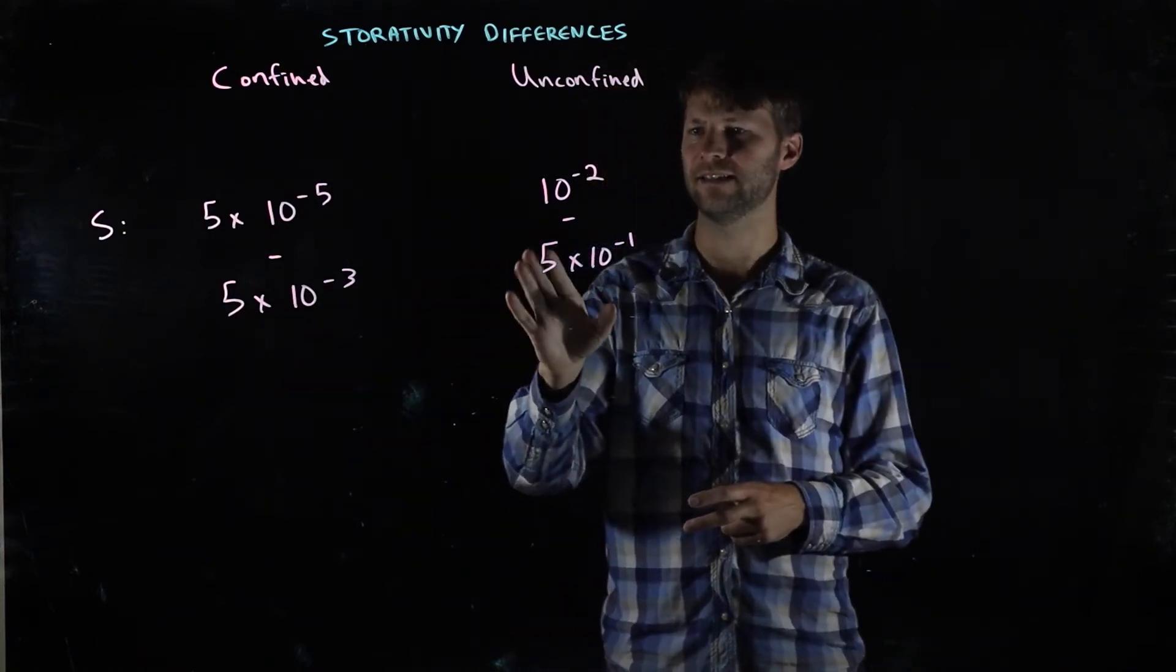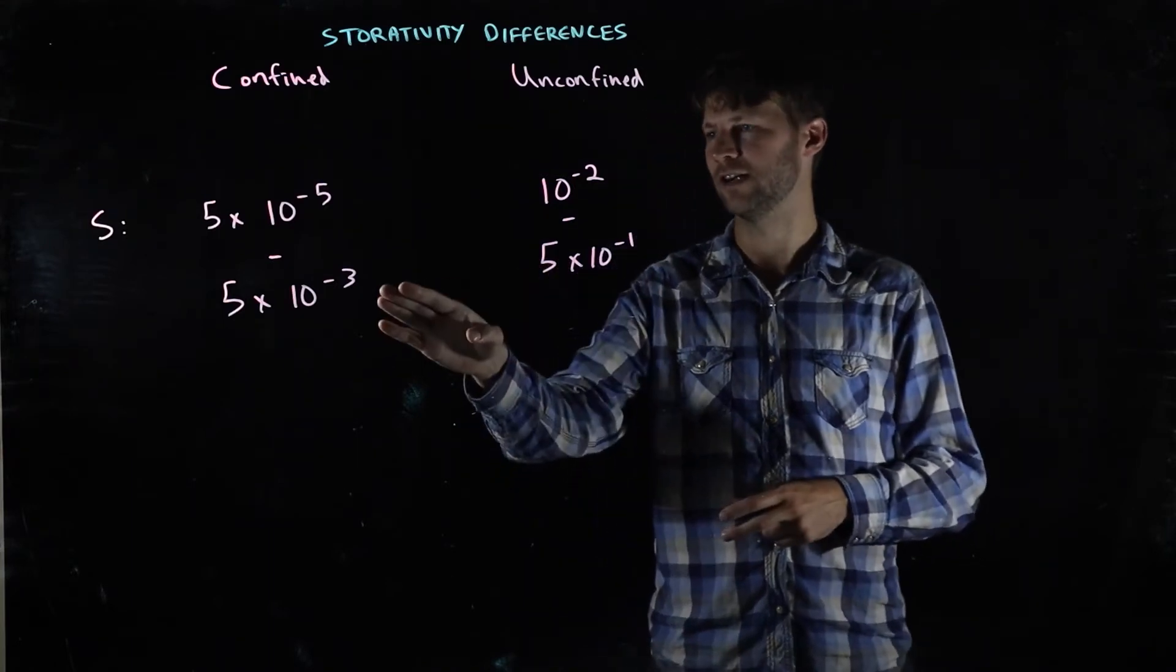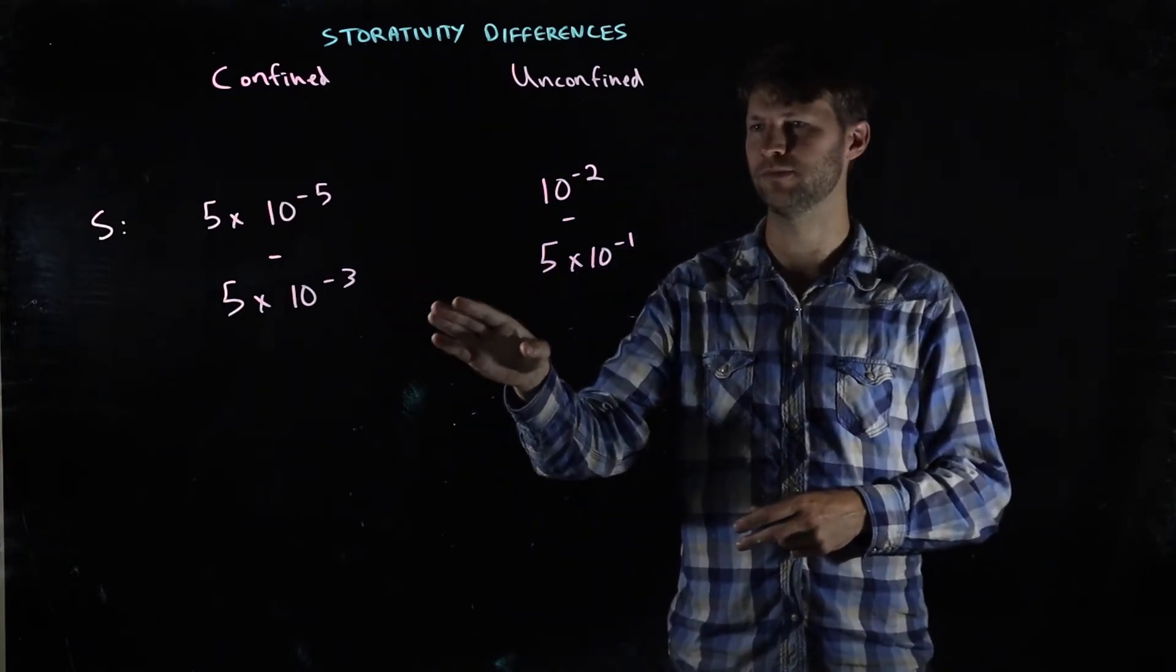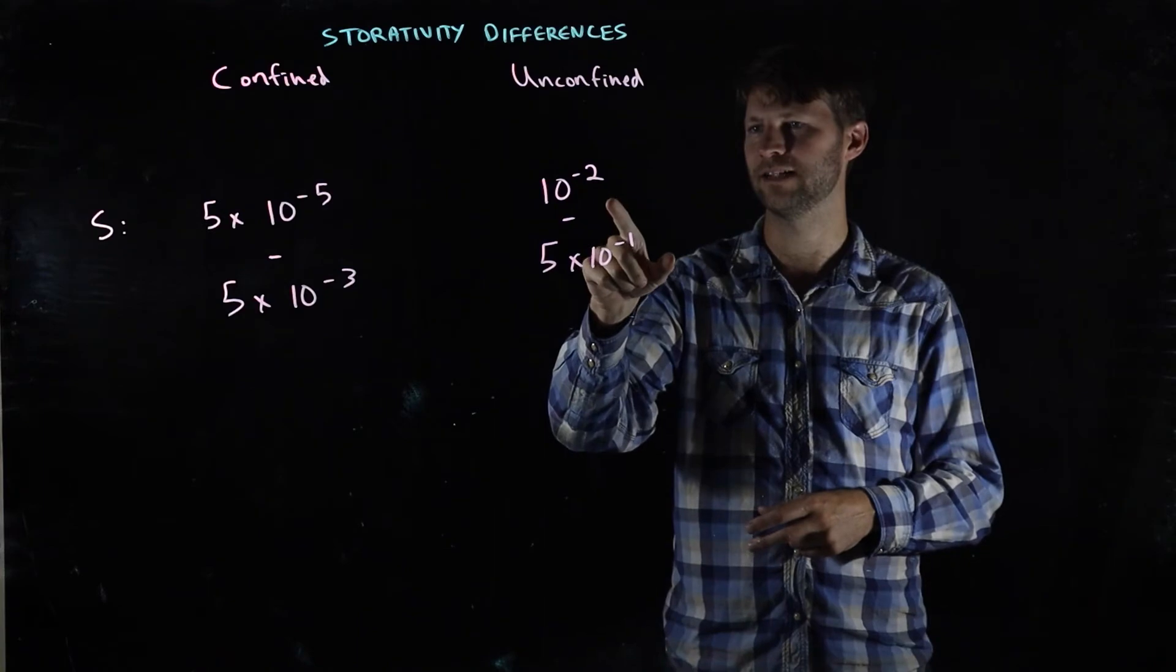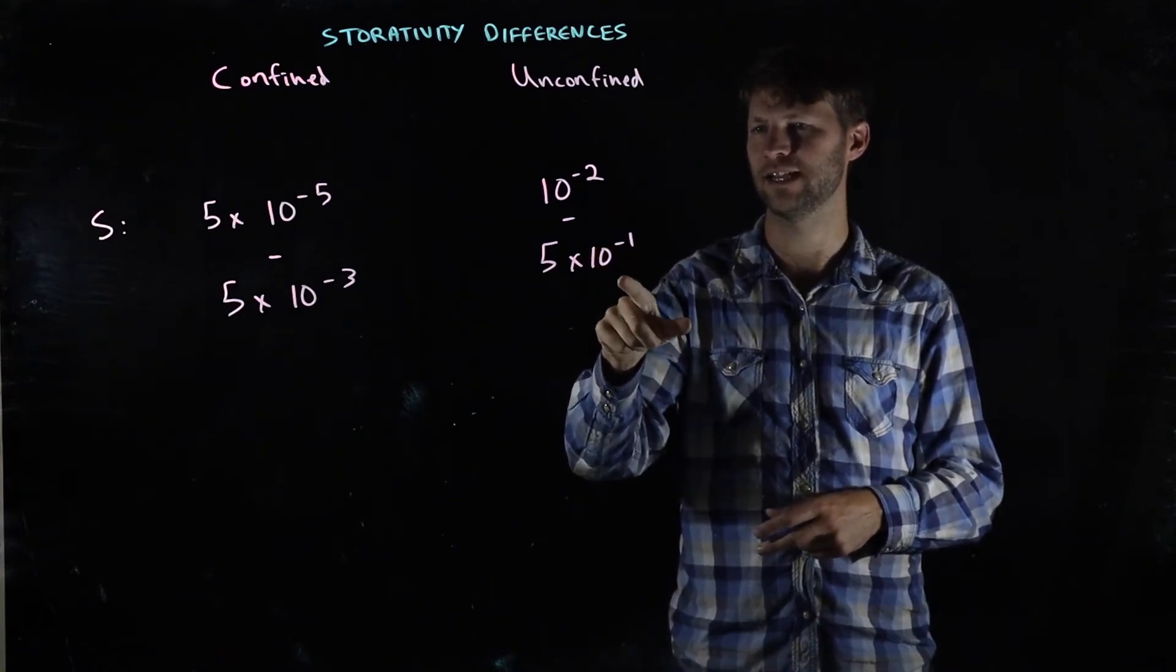In contrast, in the unconfined case you're a couple of orders of magnitude bigger. You're up to 10 to the negative 2 to 5 times 10 to the negative 1.